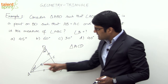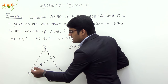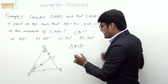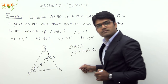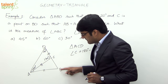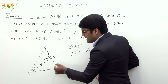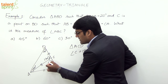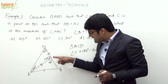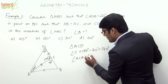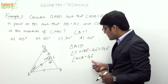In triangle ACD, two of the angles are 20 degrees each. Since the sum of all interior angles in a triangle is 180 degrees, 20 plus 20 is 40, so the remaining angle ACD must be 180 minus 40 equals 140 degrees. Now, at vertex C on line BD, this is a straight angle of 180 degrees. If angle ACD is 140 degrees, then angle ACB must be 40 degrees, because 140 plus 40 equals 180.